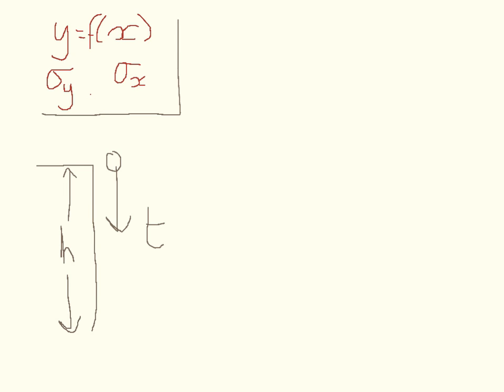Now we know from equations of projectile motion that h equals half g t squared. And let's say that t is equal to 2 seconds plus or minus 0.1.